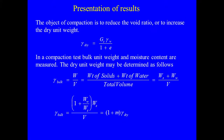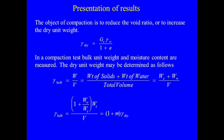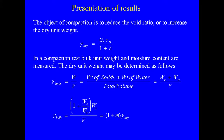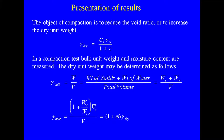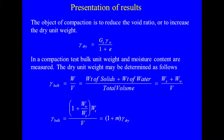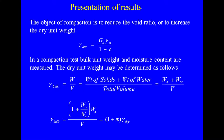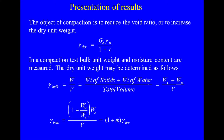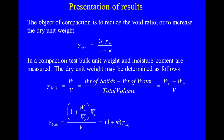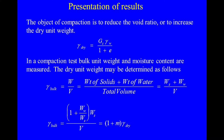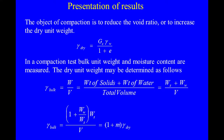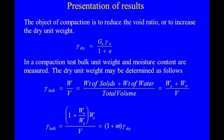Presentation of results: the object of compaction is to reduce the void ratio or to increase the dry unit weight. In the compaction test, bulk unit weight and moisture content are measured using different moisture contents and the same compaction energy. The dry unit weight is determined as: γ_bulk = (1 + moisture content) · γ_dry, so γ_dry = γ_bulk / (1 + moisture content).